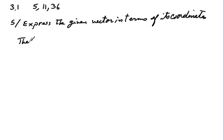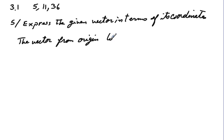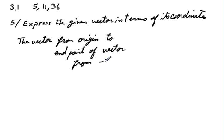We are after the vector from the origin to the end point of the vector from minus 3, 7, 2 — or more precisely, minus 3, 8, 2.